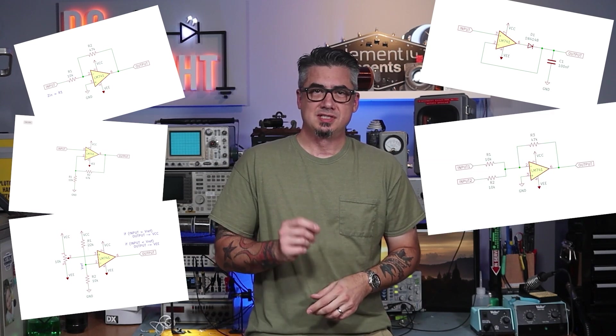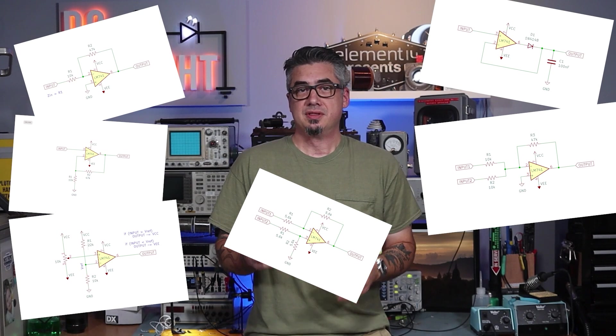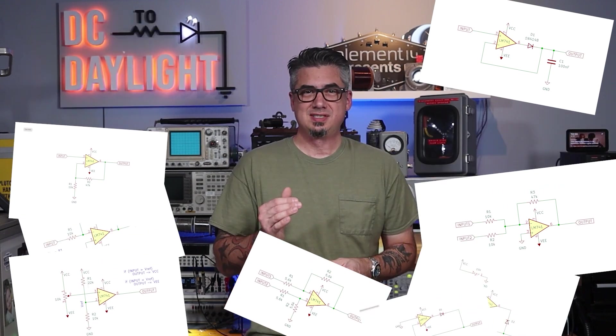We're going to look at the inverting amplifier, non-inverting amplifier, comparator, peak detector, summing amplifier, difference amplifier, and we'll throw in for good measure the clipper and clamper circuit. So let's not spend any more time talking about it, let's get right into it.